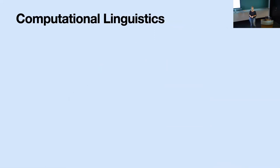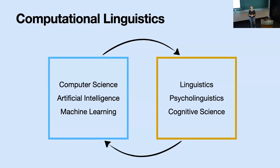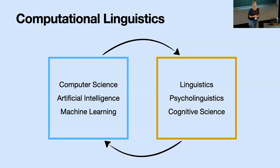My field of research is computational linguistics. You may also be familiar with the term natural language processing. Both are almost interchangeable, but I have a preference for the term computational linguistics because it makes explicit the interdisciplinarity of this field — the fact that different fields come together. I'm interested in understanding better how human language works, which involves linguistics, psycholinguistics, and cognitive science, using computational methods from machine learning, AI, and computer science.